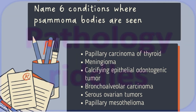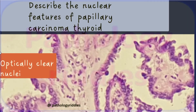Name six conditions where psammoma bodies are seen. The conditions are: papillary carcinoma of thyroid, meningioma, calcifying epithelial odontogenic tumor, bronchoalveolar carcinoma, serous ovarian tumors, and papillary mesothelioma.